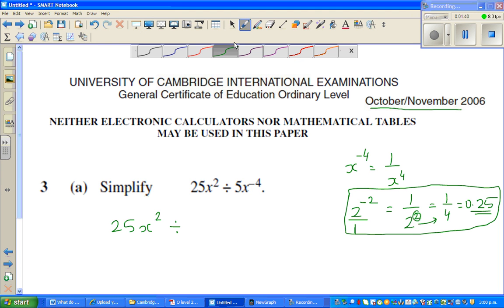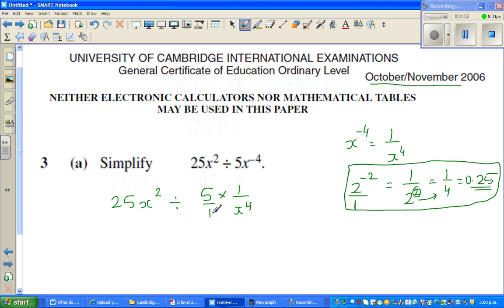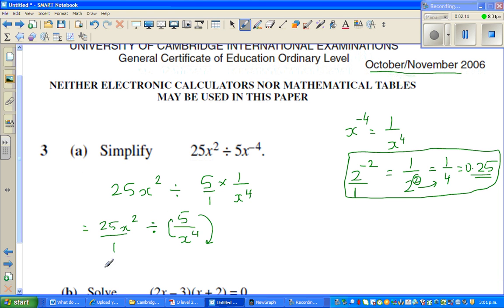So let us get started. This is equal to 25x squared divided by 5 times 1 over x to the power of 4. As I explained in the last video, any number has a numerator and a denominator. So this is 25x squared divided by 5 times 1 is 5 over x to the power of 4.